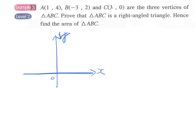So point A, it will be 1, 4. Point B, minus 3, plus 2. And for point C we have 3, 0. So this is our triangle ABC.